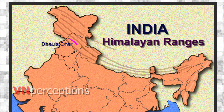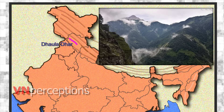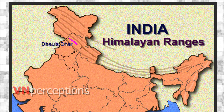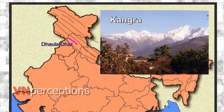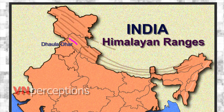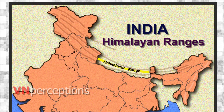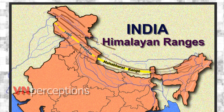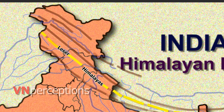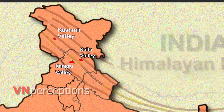The Dhauladhara range is one of the branches of the main outer Himalayan chain of mountains in Himachal Pradesh. The Dhauladhara mountain range is one of the major attractions in Kangra along with the amazing Kangra Valley. The highest peak of the Dhauladhara range is Hanumanjika Tibba with an elevation of 5,639 m. The Mahabharata range completely lies in Nepal. The lesser Himalayas consist of the Kashmir, Kangra and Kulu valleys.